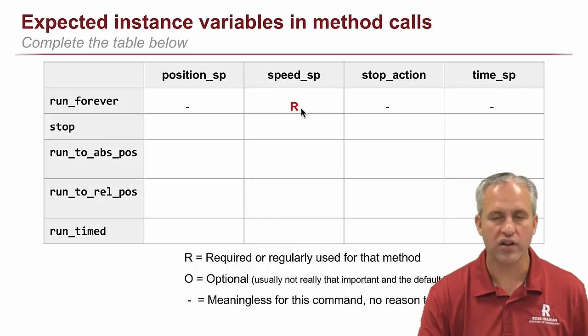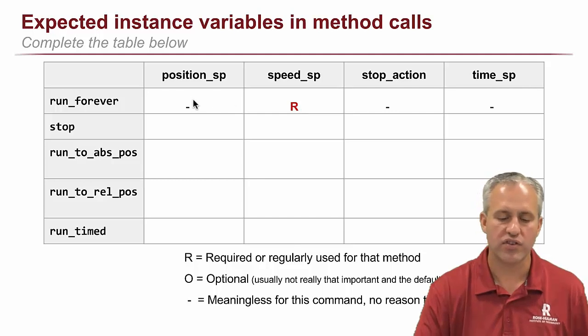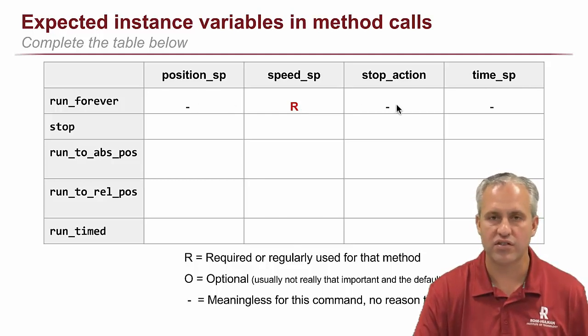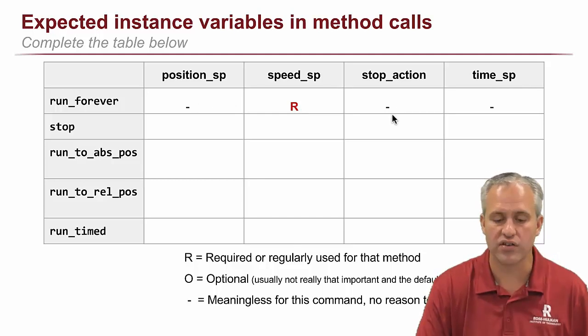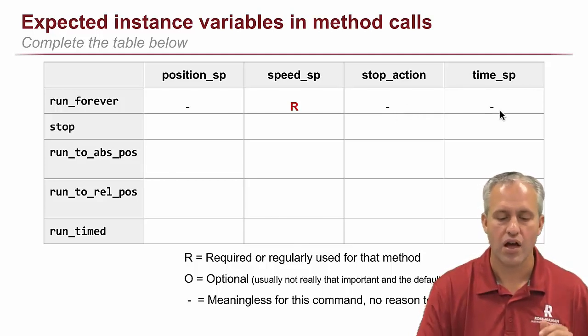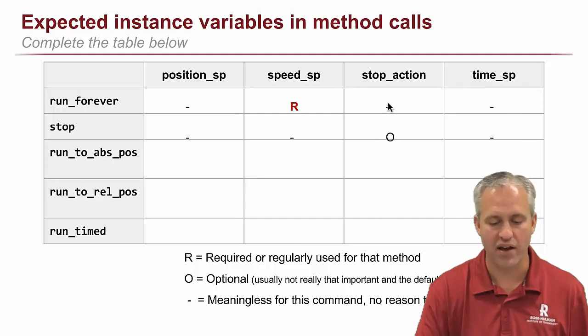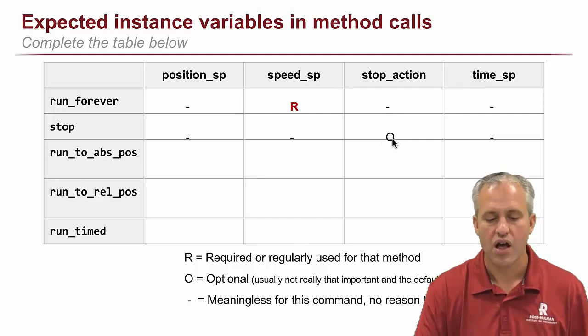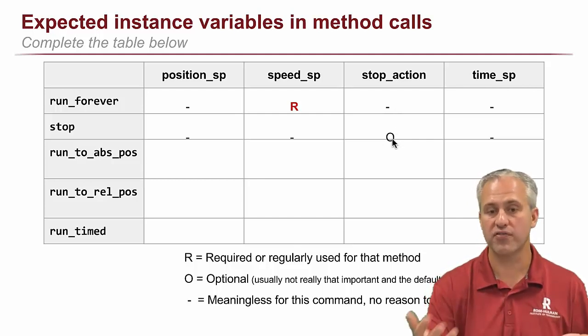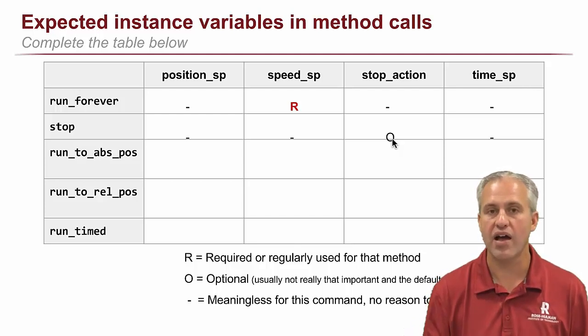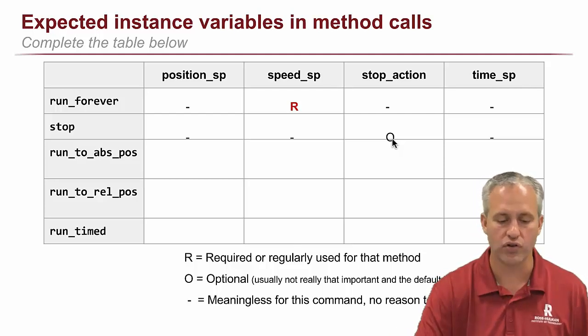The only thing that's important is the speed, right? You don't set a target position. You don't set a stop action. You could. There's nothing wrong with setting a stop action, but it doesn't do anything because it's running. You don't set a time. Think about stop for a minute. So with stop, the only one that matters at all is stop action. So the stop action, you could specify it with stop if you wanted. You don't have to. I usually don't because the default usually works out.